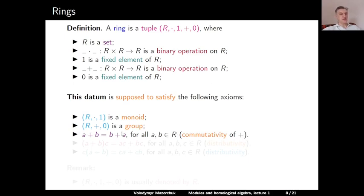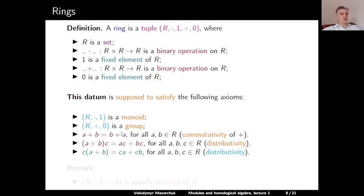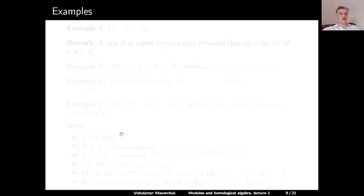Finally, the addition and multiplication in R are connected by distributivity: if we multiply the sum (A + B) with C on the right, the outcome is AC + BC; and if we multiply with C on the left, we get CA + CB, for all A, B, C. As usual, the whole tuple is usually denoted by the underlying set R. The most basic example of a ring is the ring of integers ℤ: all integers with respect to multiplication with unit element 1, and with respect to addition with element 0.